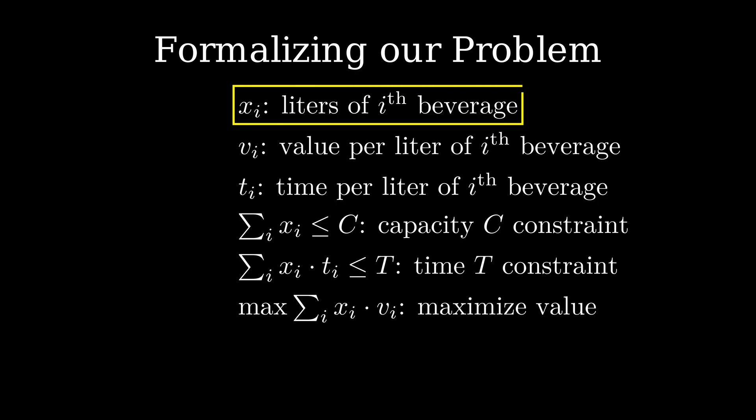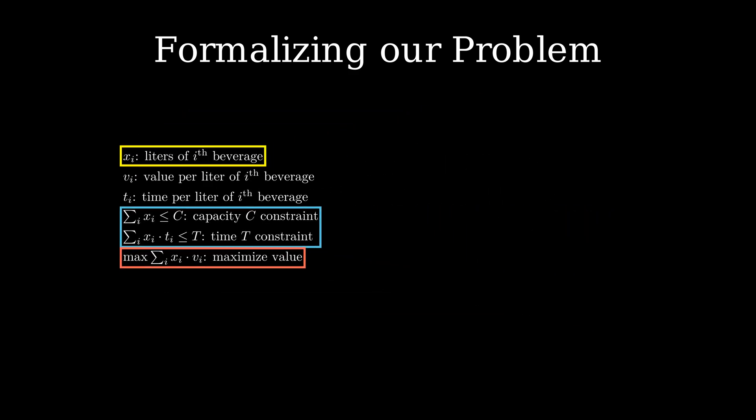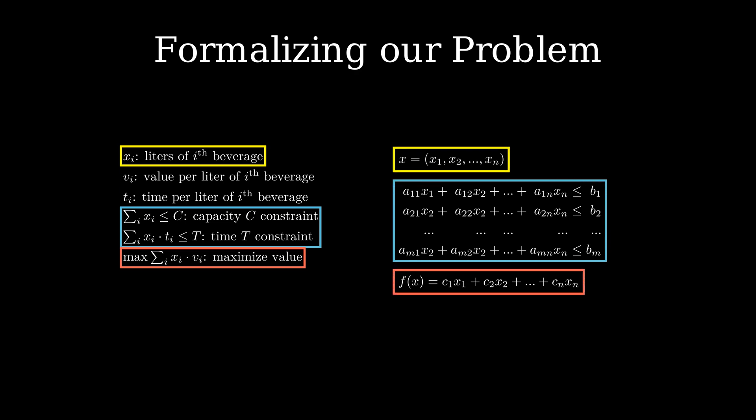We now have the variables, constraints, and objective written down. We can also express them as an optimization problem with n variables and m inequalities, where our goal is to find an x that maximizes a linear function f, our objective. We refer to this as a linear program or short LP. Note that the left and right side are equivalent and match up.